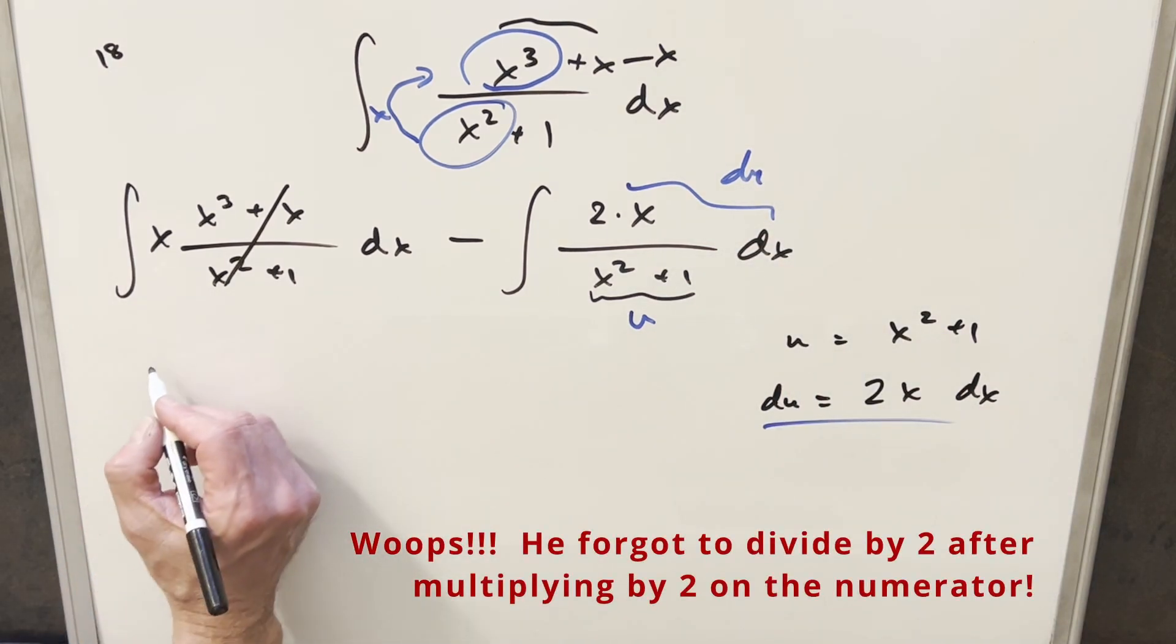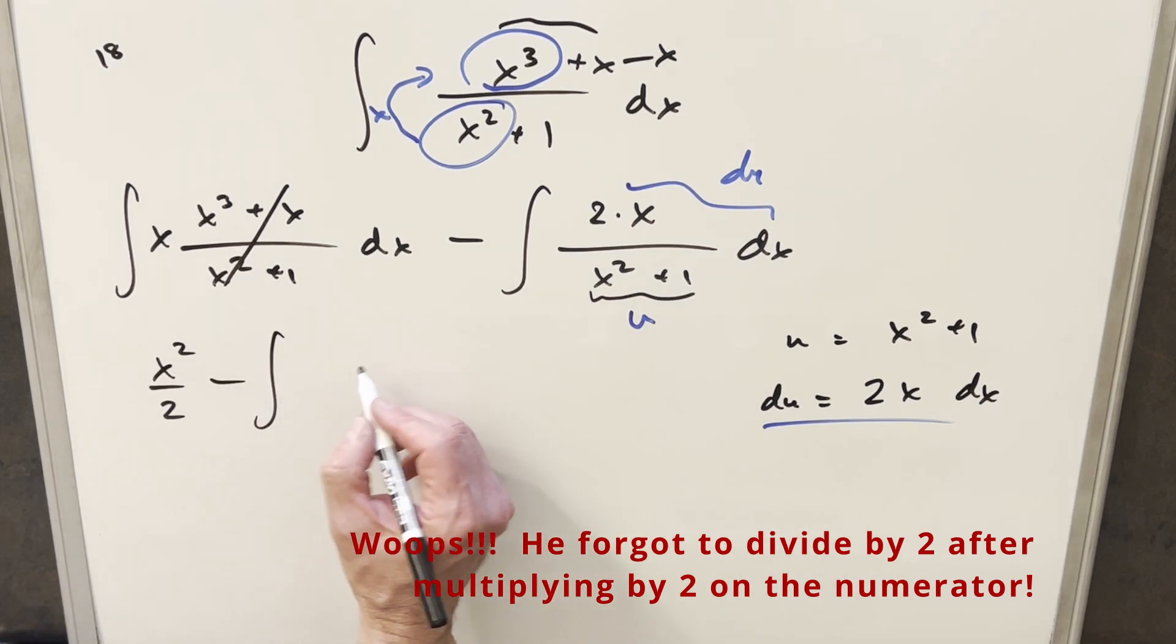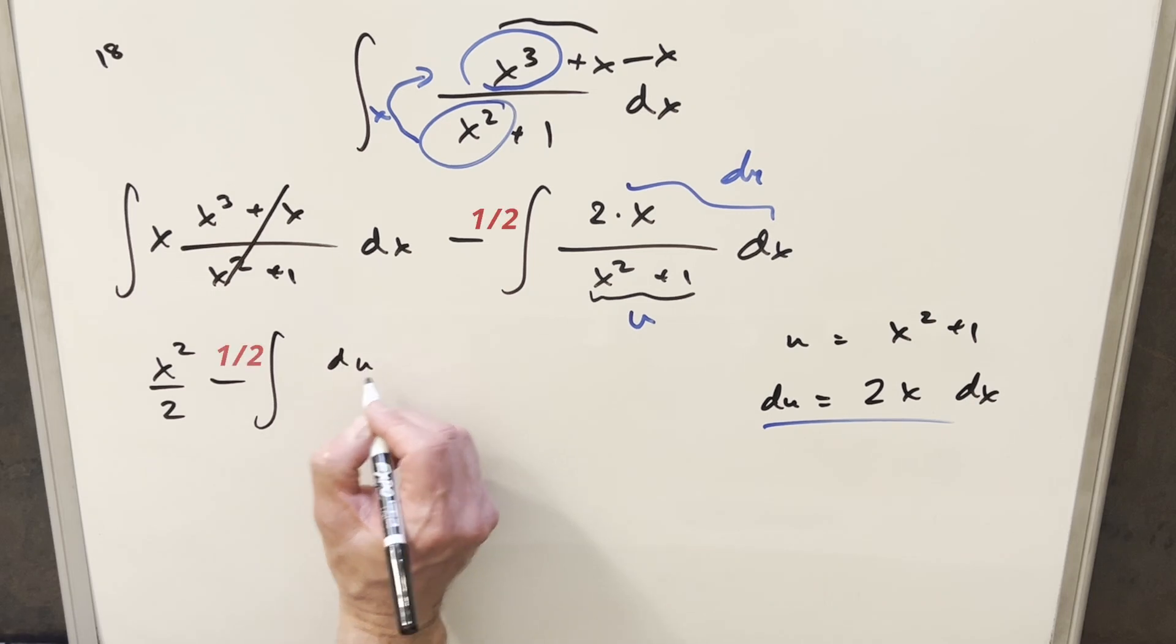So then we'll just do this first one with power rule. So first we're going to have x squared over 2 here. And then here, this whole thing transforms when we do the substitution into just du over u.